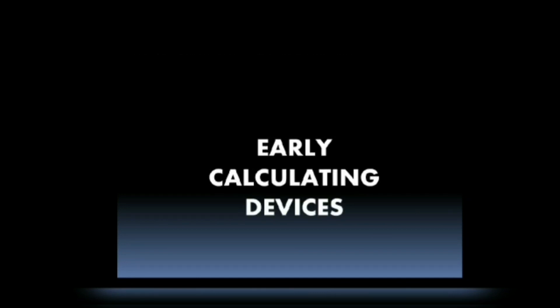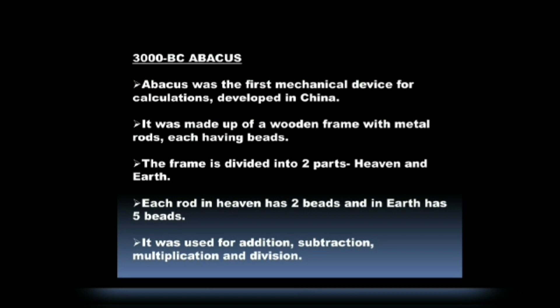Early Calculating Devices. Number 1 is the Abacus. Around 3000 BC, the Abacus was developed. It was the first mechanical device for calculations, developed in China. It was made up of a wooden frame with metal rods, each having beads. The frame is divided into two parts: heaven and earth. Each rod in heaven has two beads and in earth has five beads.